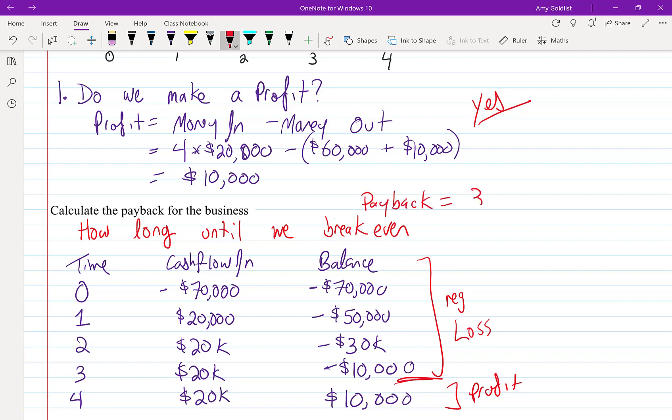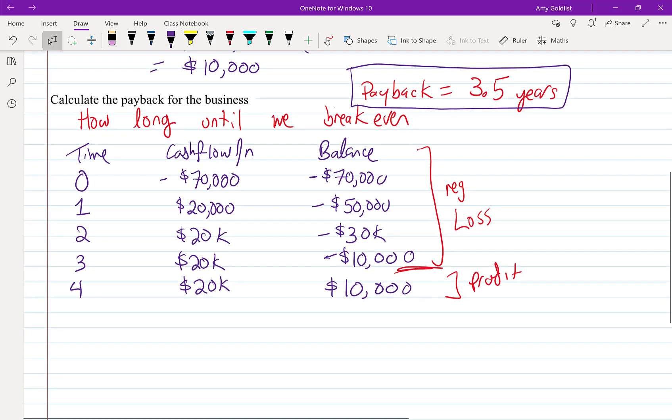We'll talk about how we get to the half, but the important thing is somewhere between Years 3 and 4 we end up with a profit. So it's going to take us 3.5 years until we get our initial investment back.